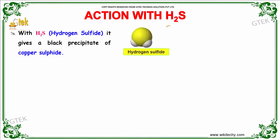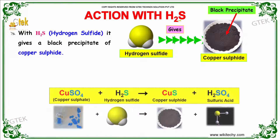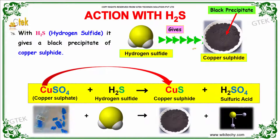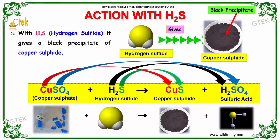Action of hydrogen sulfide: copper sulfate reacts with hydrogen sulfide to give a black precipitate of copper sulfide and sulfuric acid.